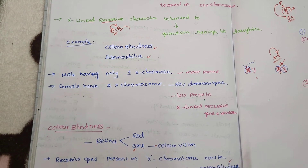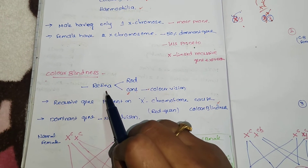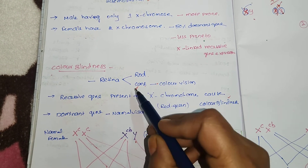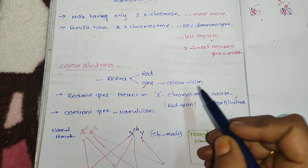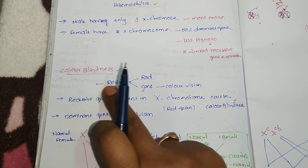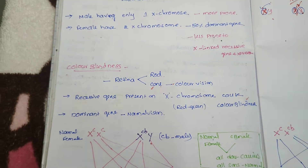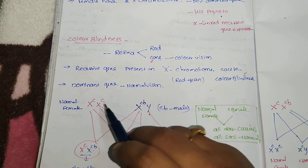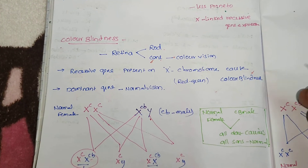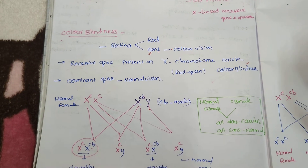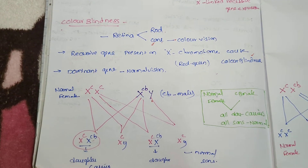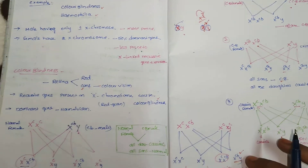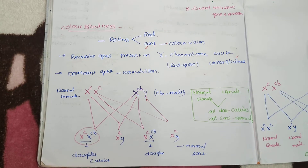Color blindness and hemophilia are examples of X-linked recessive disorders that may be asked in exams. In the retina, we have rod cells and cone cells. Remember C for color — cone cells are responsible for color vision. Color blind persons are not able to recognize red and green colors. If the dominant gene is present, vision is normal; if not, they have the disorder.